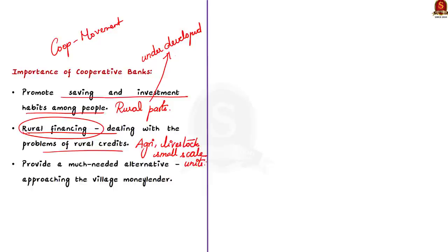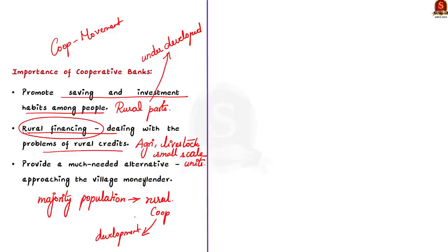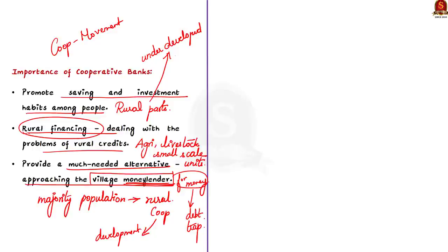There is a significant amount of population residing in rural parts of India, and cooperative banks serve as a way out for people who need money. Instead of approaching the village moneylender, they can form an association, pool in the resources, and benefit from common resources. Now let's move on to see the structure of cooperative banking. There are different types of cooperative credit institutions working in India, classified into two broad categories: Agricultural Credit Institutions and Non-Agricultural Credit Institutions.